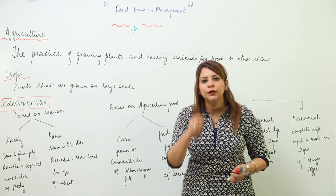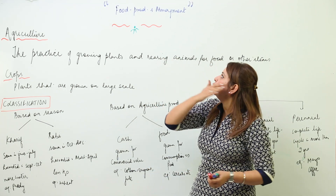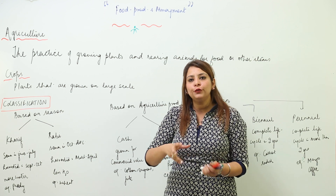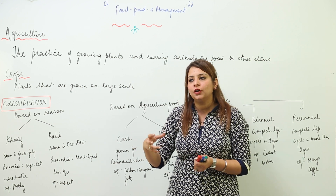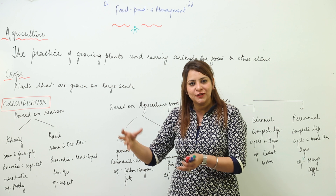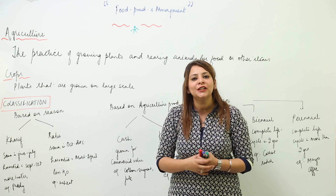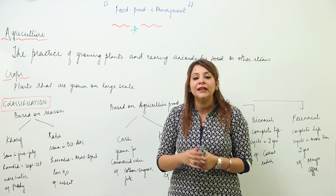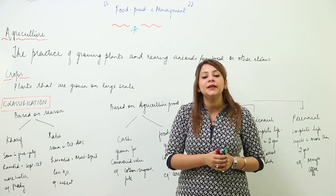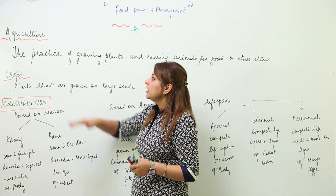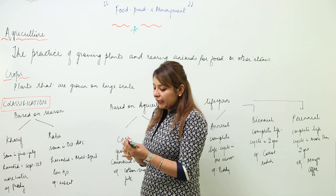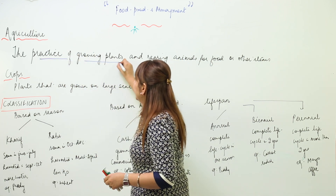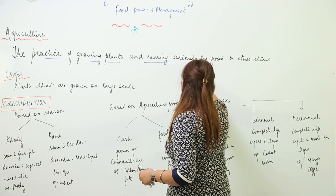We are going to start with a unit on food production and management. The food which we get in the form of crops plays a very important role and falls under the branch of science called agriculture. Agriculture is the practice of growing plants and rearing animals for food and other items.